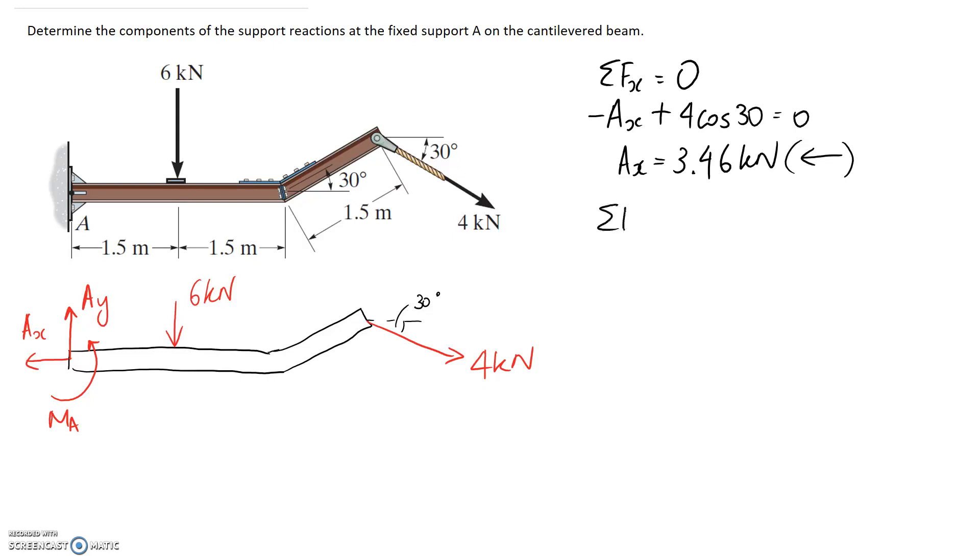Alright so let's move on to our next equilibrium equation which is sum of forces in the y direction have to be zero. So from the left hand side we have Ay going up so it's positive. We have 6 kilonewtons going down which is negative and we have a component of this going down. So it's going to be minus 4 sin 30 so this has to be equal to zero for equilibrium.